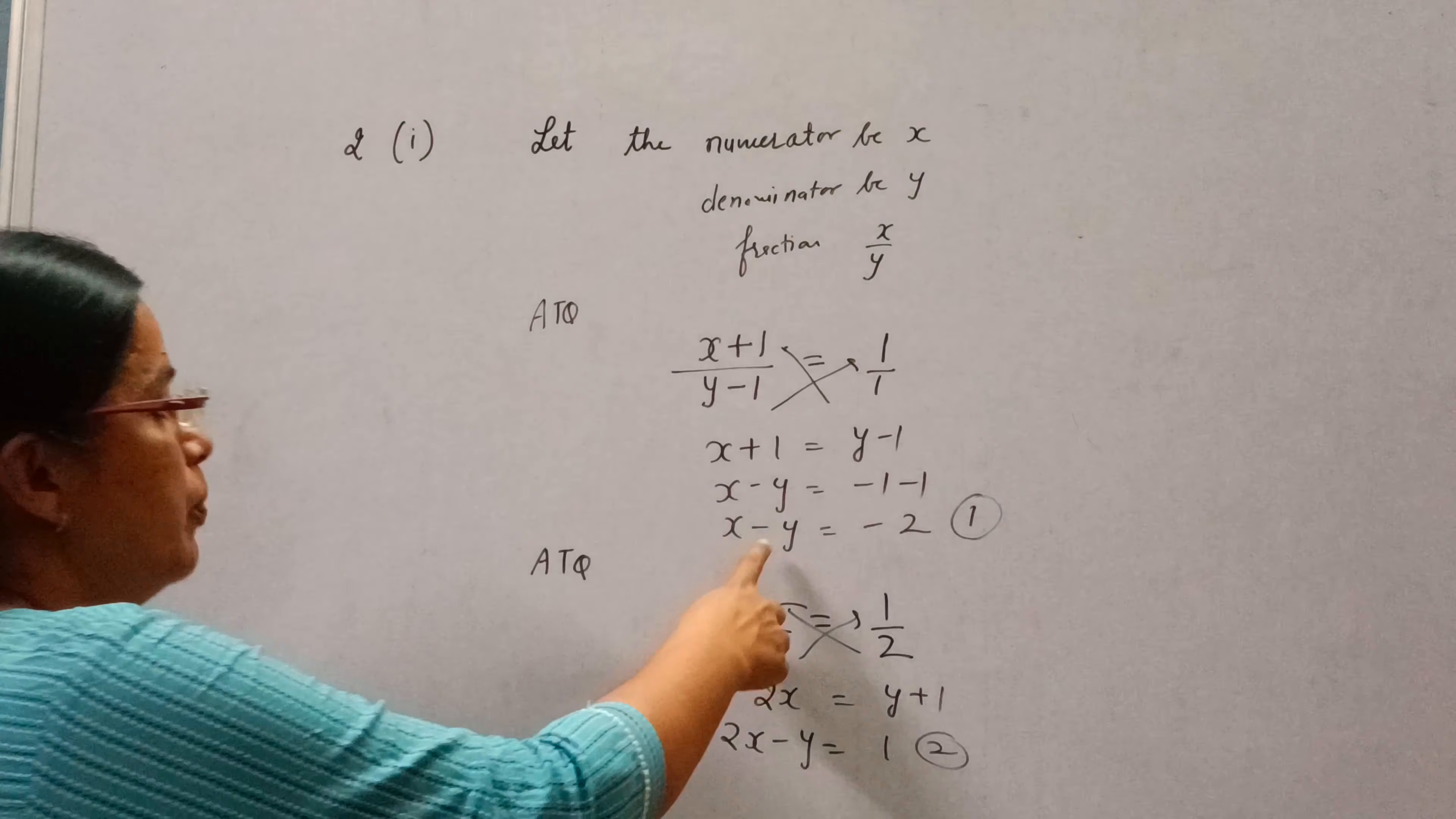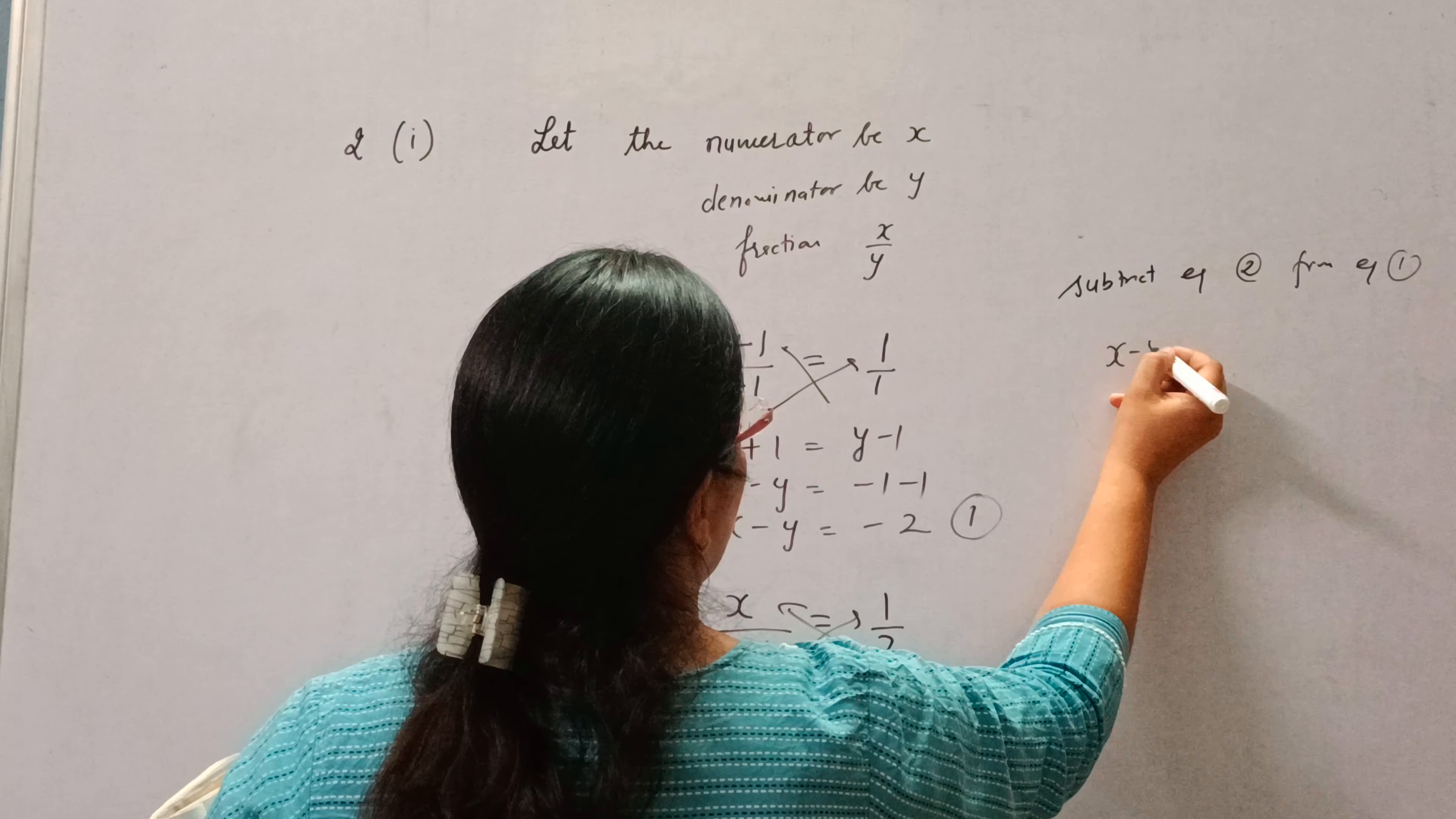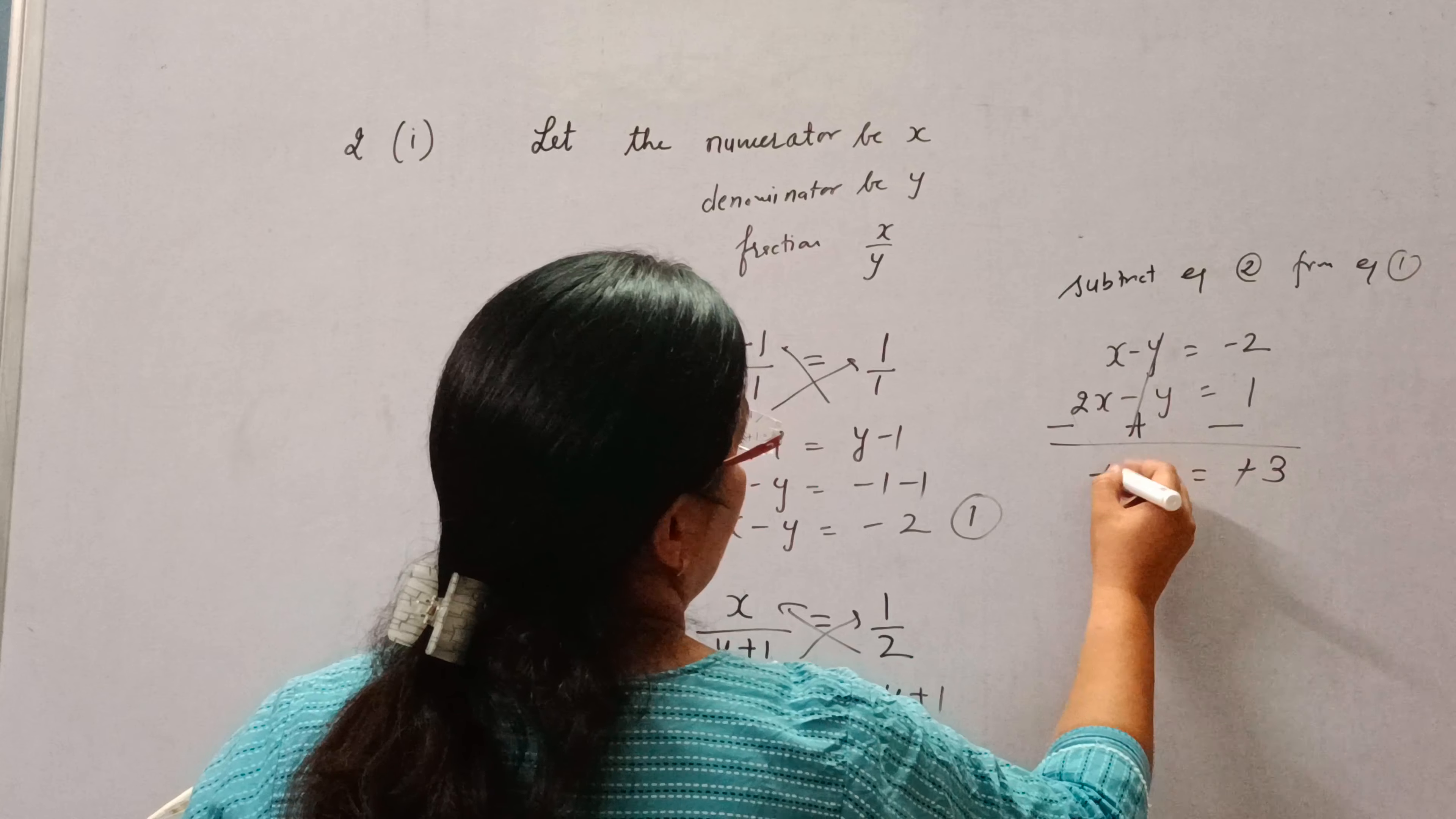Now you can see, this is minus y and this is also minus y. So simply we will subtract equation 2 from equation 1 using elimination method. So x minus y equals minus 2, and 2x minus y equals 1. Minus plus minus, so it will be minus x equals minus 3.